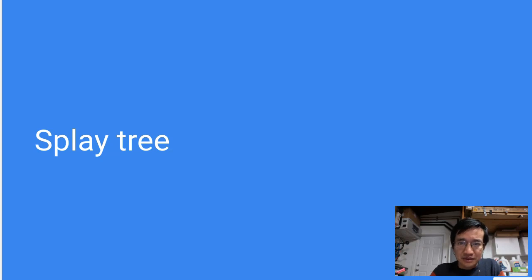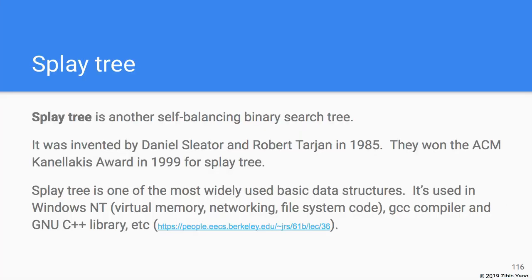We're going to talk about splay trees in this video. A splay tree is another kind of self-balancing binary search tree. It was invented by two computer scientists who won the ACM award in 1999 for the splay tree. The ACM award is a very prestigious award in computer science.